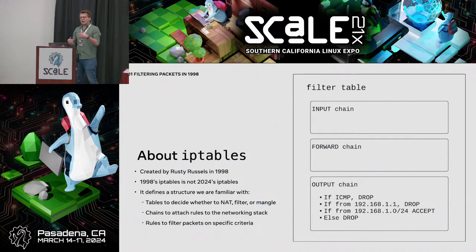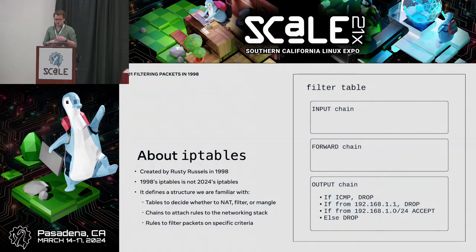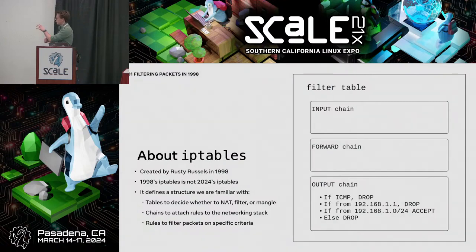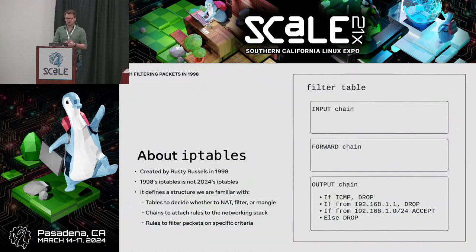First, let's go back a bit to give some context and a refresher about IP tables and how it works. IP tables is a quite old tool from 1998. It's a packet filtering mechanism which was, up to some point, the de facto standard on Linux. IP tables is structured with different tables — which can be NAT, mangle, or filter — that define what kind of processing you want to do. For this talk, we'll focus on filtering packets.